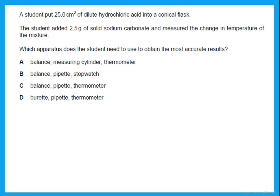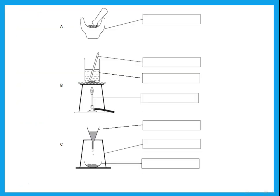A student puts 25.0 cm³ of dilute hydrochloric acid into a conical flask, adds 2.5 grams of solid sodium carbonate, and measures the change in temperature. For 25.0 cm³ accurately, the student needs a pipette. For 2.5 grams, the student needs a balance. To measure change in temperature, a thermometer is needed. So the answer is C.